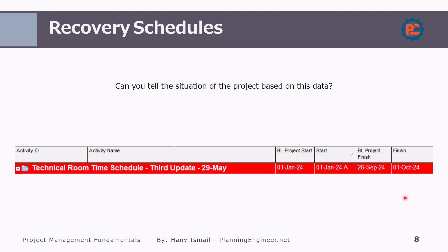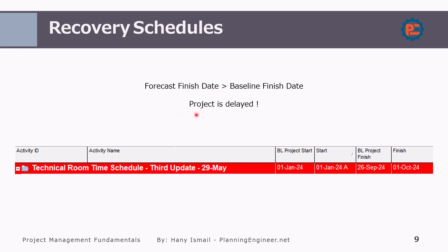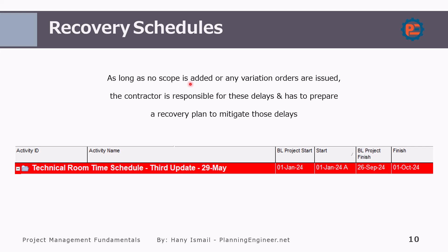I know this is a forecast date and not actual because there is no letter beside the date. If you haven't seen the lesson on how to read from a Primavera time schedule, I highly recommend going back to check that lesson. So the forecast finish date is greater than the baseline finish date — it means the project is delayed. You might see that planned percentage and actual percentage do not tell the whole story; you need to also see the planned finish date and forecast finish date. As long as no scope is added or variation orders are issued, the contractor is responsible for these delays.